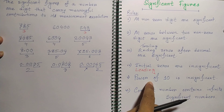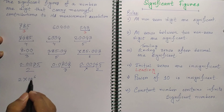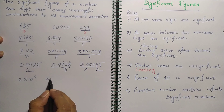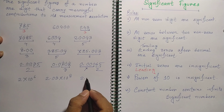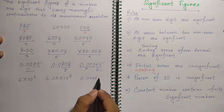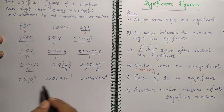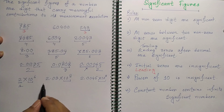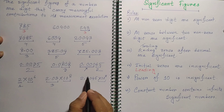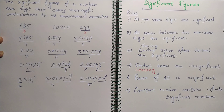Rule five: the power of 10 is insignificant. For example, 2 × 10⁶ has only 1 significant figure. 2.03 × 10⁸ has 3 significant figures. And 2.0045 × 10⁷ has 5 significant figures — the zeros after the decimal are counted, but the power of 10 is not.